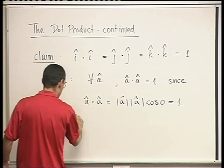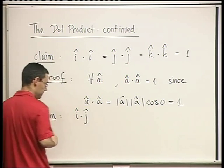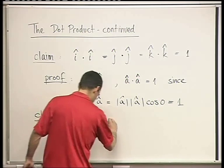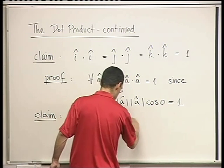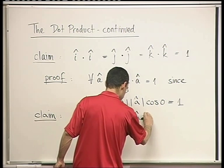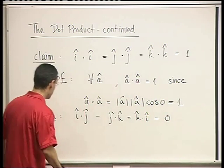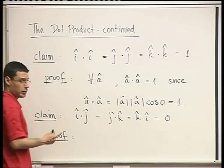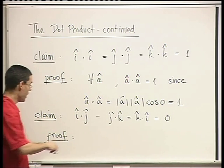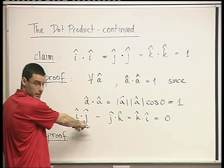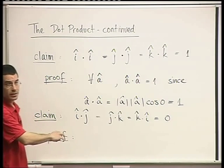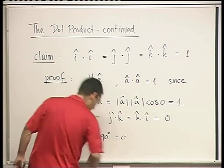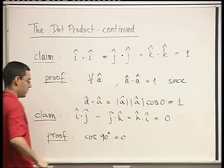The other claim is: what is i dot j? The same goes for j dot k and k dot i — they're all just 0. The reason is that i and j are perpendicular, being in the direction of the axes, so the angle between them is 90 degrees, and cosine of 90 degrees is 0. So the proof is simply that cosine of 90 degrees equals 0.